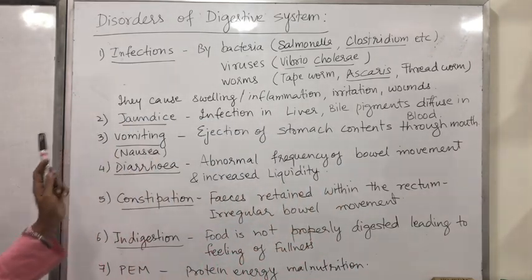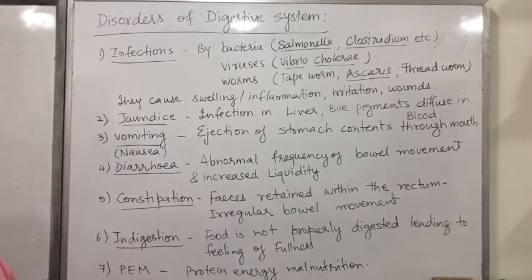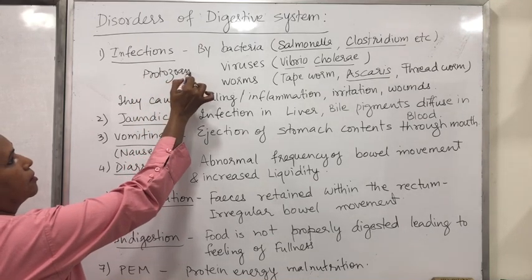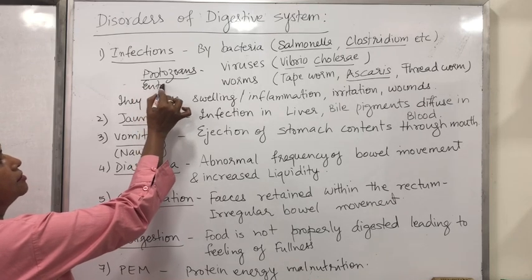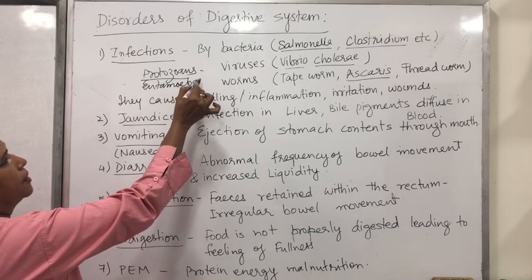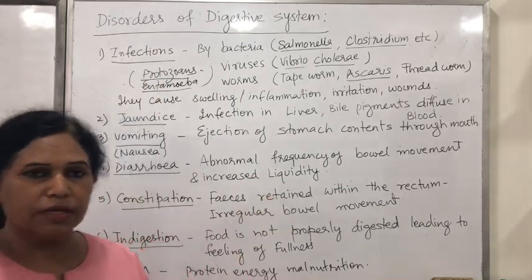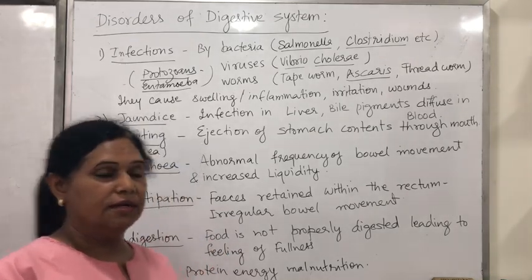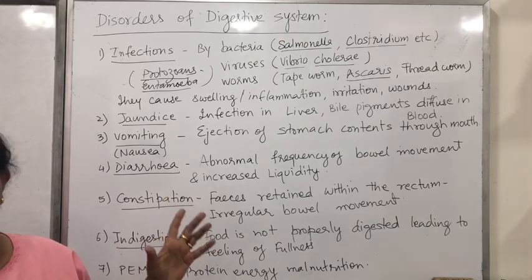The very first problem is infections, which could be because of bacteria, viruses, or even protozoans — protozoans like Entamoeba. Bacteria could include Clostridium and Salmonella, which causes typhoid. Then there could be viruses like Vibrio cholerae, which causes cholera.